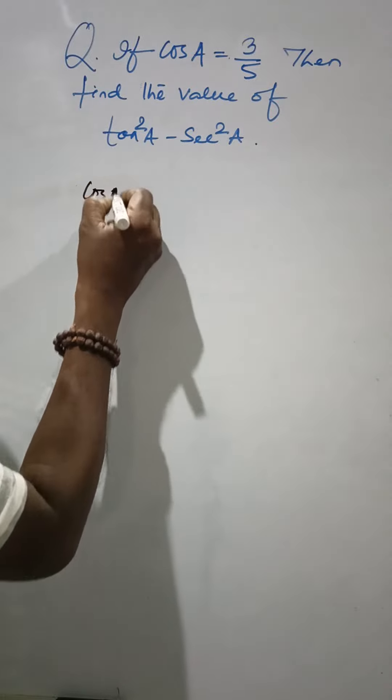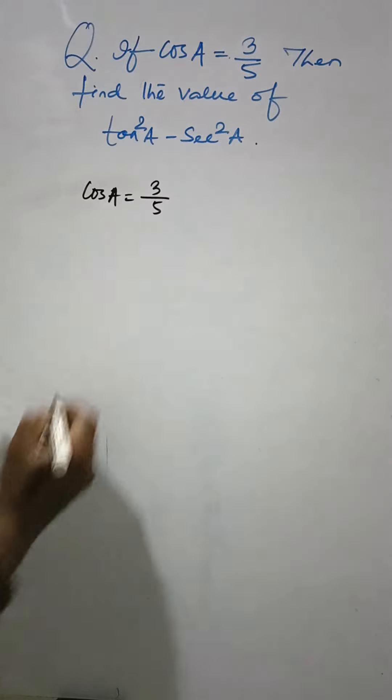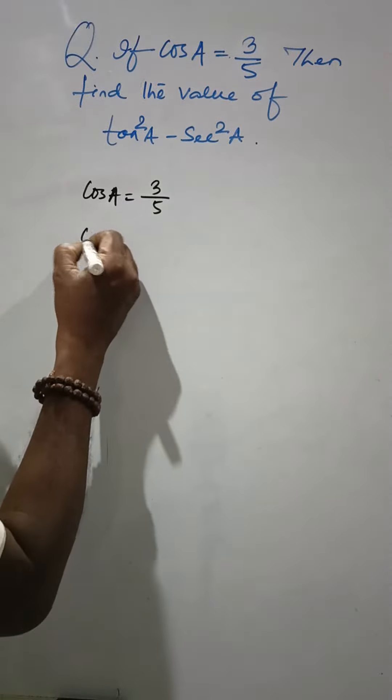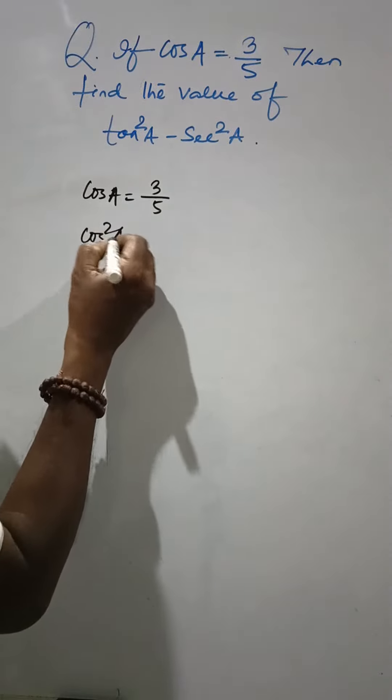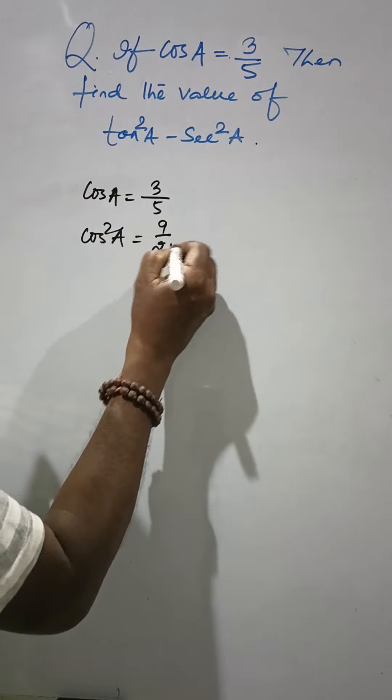cos A is equal to 3 by 5, it is given. Then squaring both sides, cos square A is equal to 9 by 25.